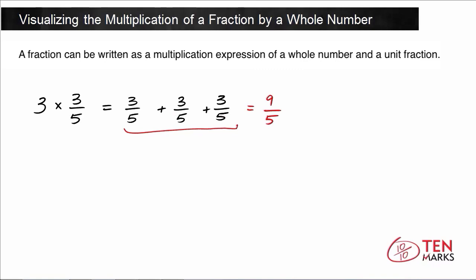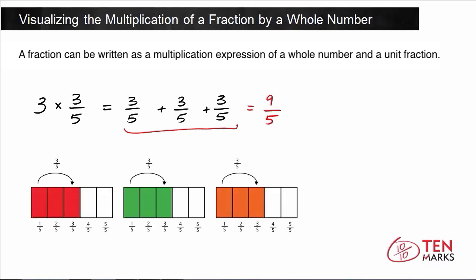Now let's take a look at this with a model. Here's the model for this multiplication. You have 3 three-fifths fraction strips. And so if you add these all up, 1, 2, 3, 4, 5, 6, 7, 8, 9, we see that 9 parts and each whole is divided into 5 equal parts. So we get the same fraction when we look at it in the model.